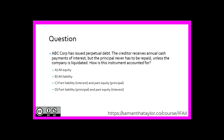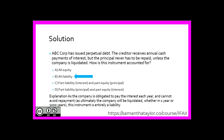Let's look at a question. ABC Corp has issued perpetual debt. The creditor receives annual cash payments of interest, but the principal must never be repaid unless the company is liquidated. How is this instrument accounted for? Should it be A) all equity, B) all liability, or C) part liability for the interest and part equity? The correct answer is B, all liability. This is because the company is obliged to pay the interest each year and cannot avoid repayment, as ultimately the company will be liquidated — whether in one year or a thousand years. This instrument is entirely a liability.